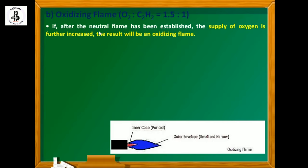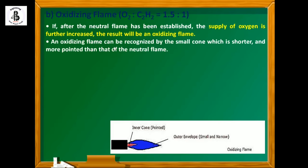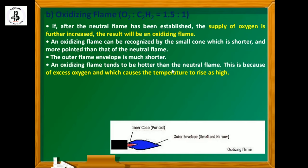After the neutral flame has been established, the supply of oxygen is further increased. The result will be oxidizing flame. An oxidizing flame can be recognized by the small cone which is shorter and more pointed than the neutral flame. The outer flame envelope is much shorter than a neutral flame. An oxidizing flame tends to be hotter than a neutral flame because of the higher amount of oxygen being supplied. This is because of excess oxygen which causes the temperature to rise as high as compared to neutral flame.